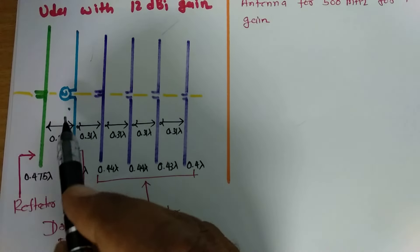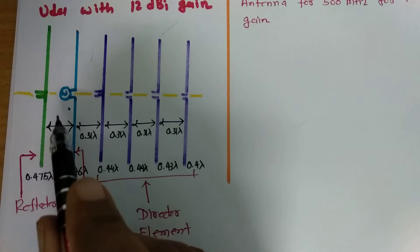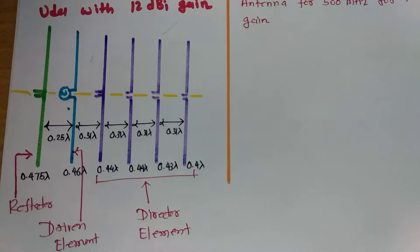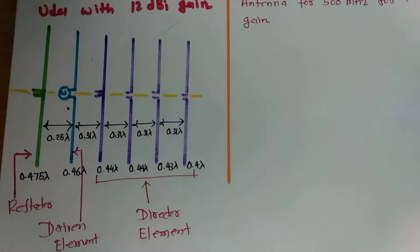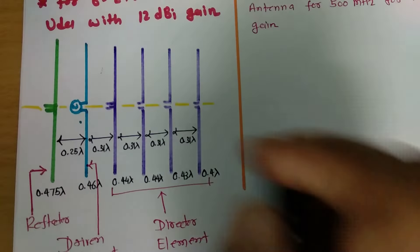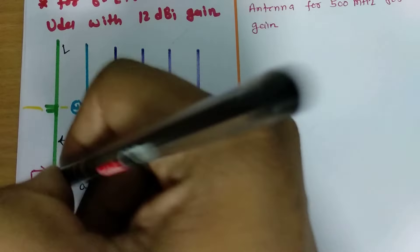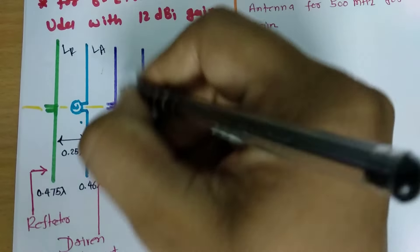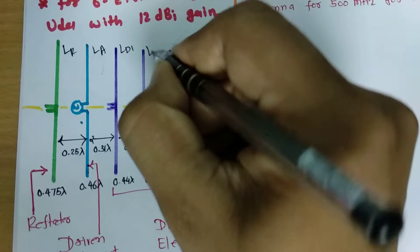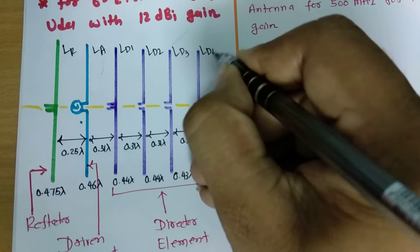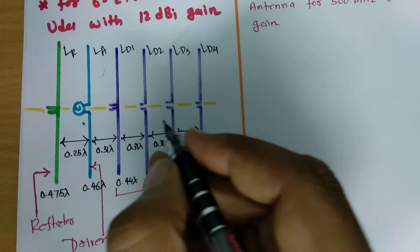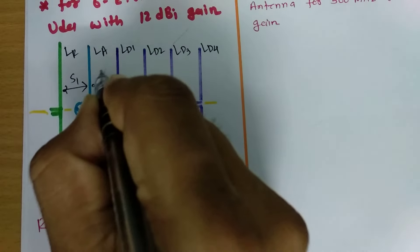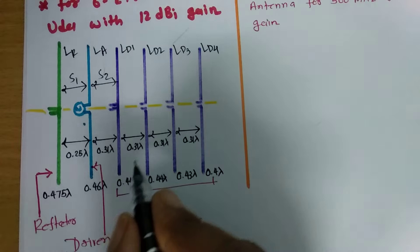One more thing to understand: the driven and reflector elements are separated by lambda by 4, and the other spacings between directors are 0.31 lambda. So the reflector element length is LR, active element length is LA, and the four directors are LD1, LD2, LD3, and LD4. Spacing 1 is lambda by 4, and spacing 2 is 0.31 lambda.